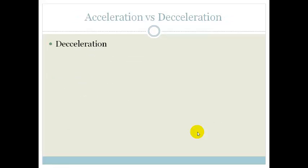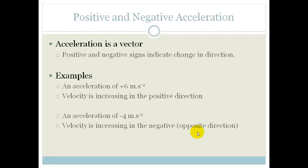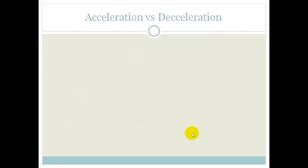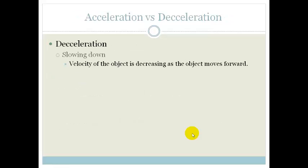But you need to understand the difference between acceleration and deceleration. Deceleration is slowing down. So the velocity of the object is decreasing as the object moves forward. So let's just go through that again. If you have an acceleration of minus 4, you're increasing, but it's in the opposite direction. Whereas deceleration, what we're doing is we're still traveling in the same direction, but now we are slowing down.